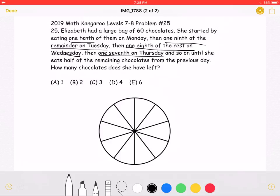we can use this pie that is divided into ten equal pieces to represent Elizabeth's large bag of 60 chocolates due to the fact that the numbers are one-tenth, then one-ninth of the remaining, then one-eighth of the remaining, then one-seventh of the remaining, and so on.